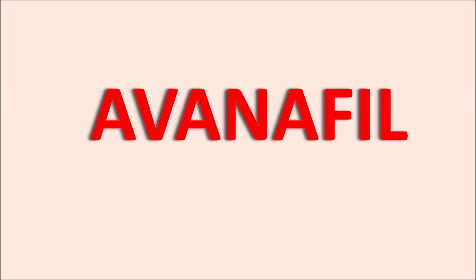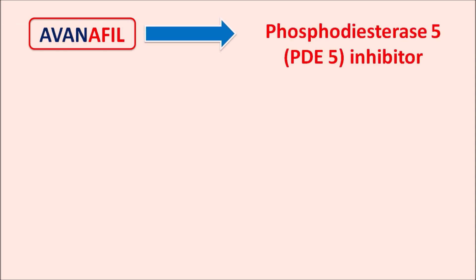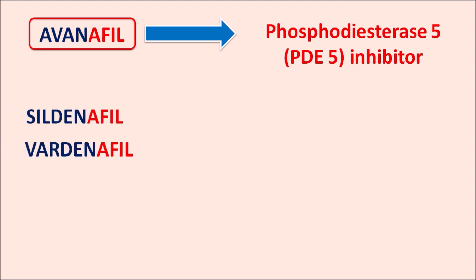Today in this video we are going to discuss about Avanafil. The suffix '-afil' indicates this drug is a selective phosphodiesterase type 5 inhibitor. We have a few other drugs with a similar suffix such as sildenafil, vardenafil, and tadalafil — all having the same suffix '-afil' which indicates they are PDE5 inhibitors.